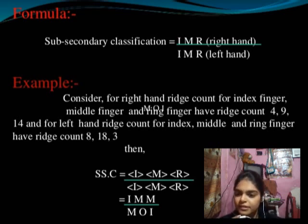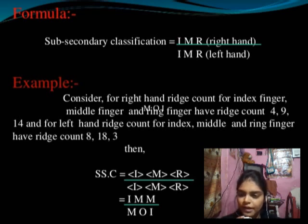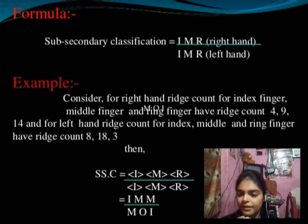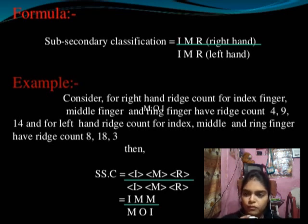For example, consider the right hand ridge count for index finger, middle finger, and ring finger having ridge counts 4, 9, and 14. For the left hand, the ridge counts for index, middle, and ring finger are 8, 13, and 18. Then we make the formula I, M, R upon I, M, R — giving I, M, M over I, M, O. Then the number of possibilities are formed.